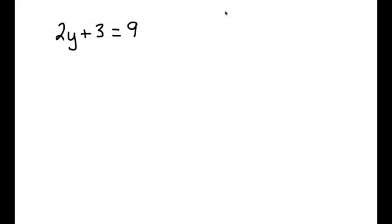In this video we're going to look at how to use inverse operations and the property of equality to solve a two-step equation. The only difference between a two-step equation and a one-step equation is that if you look at the variable here — in this case a y — you can see that there are two operations being performed on the y.